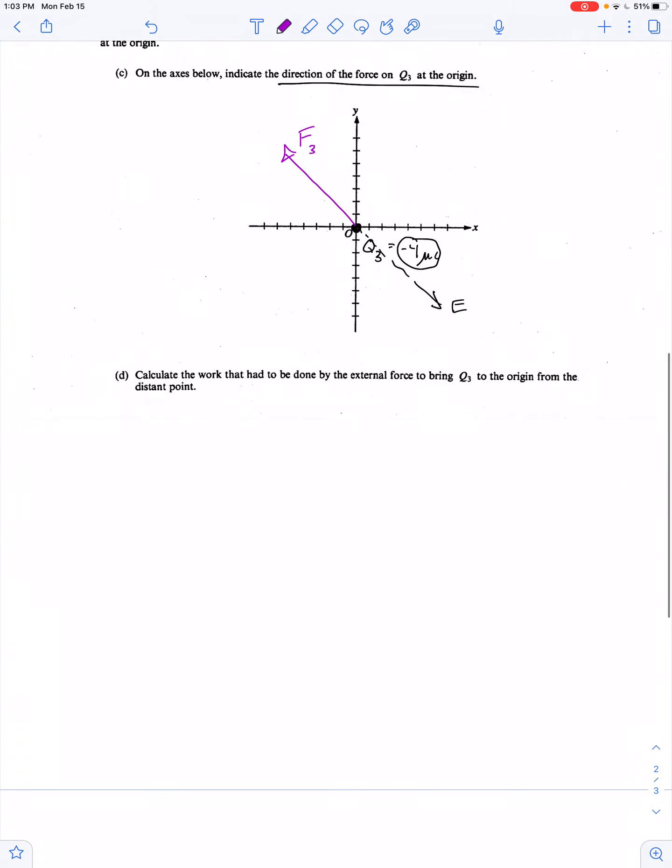Calculate the work that had to be done by some external agent to bring this charge to the origin. So the work done by the field is negative the change in potential energy, but the work done by an external agent is positive the change in potential energy. Now this is the potential energy at the origin minus the potential energy when it's very far away, but we know that's going to be 0.